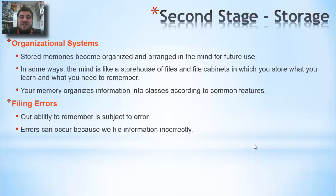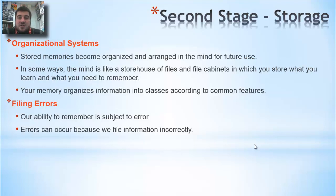Our organizational systems in our head are kind of like a computer. We arrange things in our mind into schemas — like a storehouse of files and file folders. We store and learn what we need and want to remember, and classify things according to common features. Storage is subject to error, and if we can't remember something, it's probably because we filed it incorrectly.